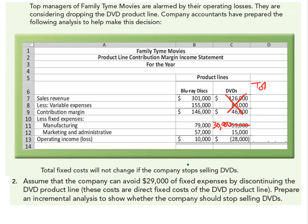So what happens then? We carry across $301,000 for revenue because we got rid of DVDs. Variable expenses are still $155,000, and our contribution margin will be $146,000. Now our fixed manufacturing costs will only be $109,000, which is the Blu-ray division plus $30,000 of the DVDs. We can't get rid of all those expenses — our marketing costs are not going away, so $57,000 plus $15,000 gives us $72,000 for marketing and administrative fixed costs. We take our contribution margin of $146,000 and subtract the fixed manufacturing cost of $109,000 and the fixed marketing cost of $72,000.